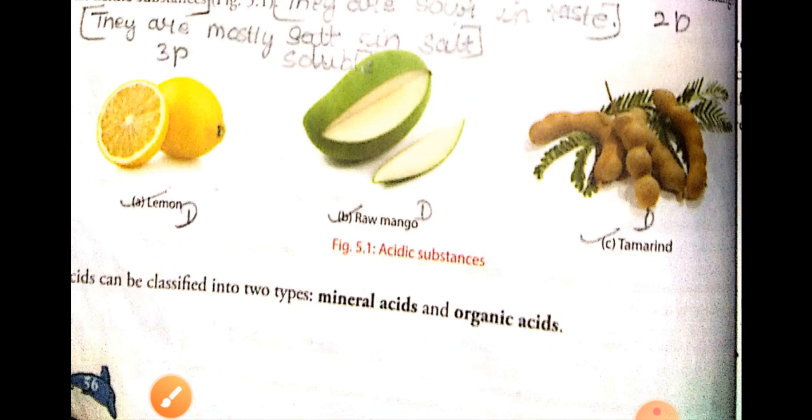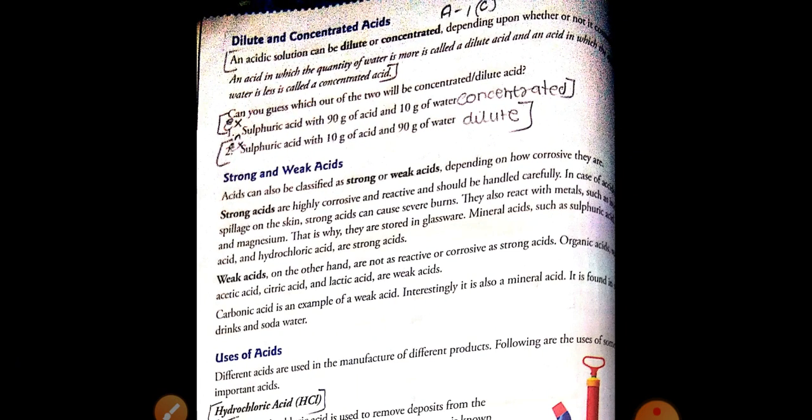We also saw about dilute and concentrated acids. Acids which have a large amount of water in them are called dilute acids, whereas acids which have very less amount of water are called concentrated acids. We also saw about strong and weak acids — acids which are highly corrosive are called strong acids, and those which are less corrosive are called weak acids.